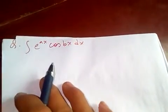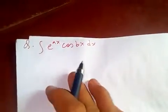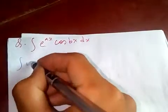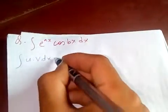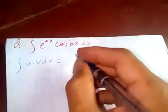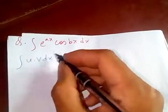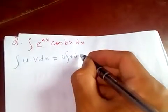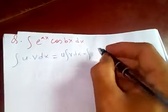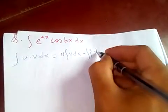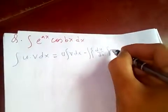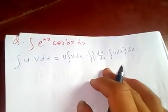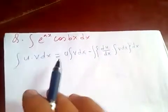Let me remind you of integration by parts. The formula is: integral of u·v dx equals u times the integral of the second function, minus the integral of the derivative of the first function times the integral of the second function dx.